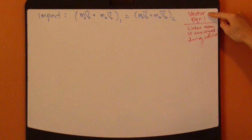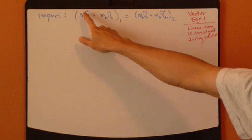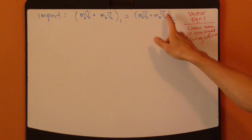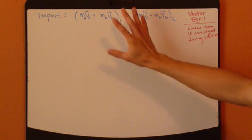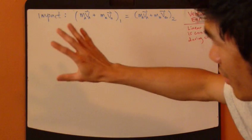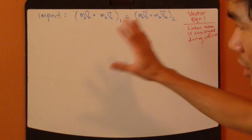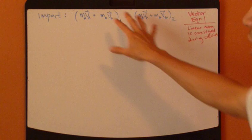Now, keep in mind, this is a vector equation. Each term is a vector, which means that it has directions. So we need to apply this into, let's say, x and y or any other directions before we actually plug in numbers.